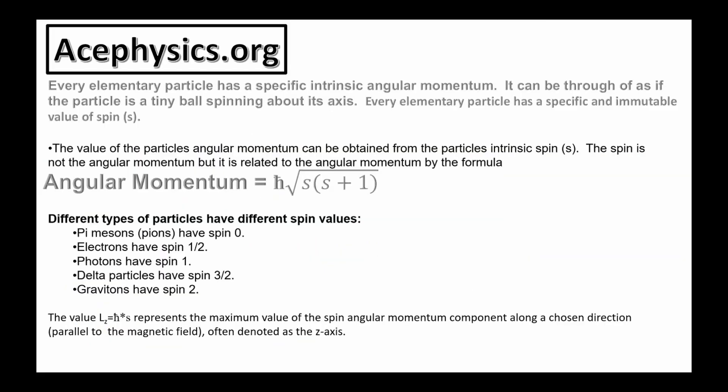On this slide, I'm going to tell you about some important properties of elementary particles. On the next slide, I'll use a gyroscope to help visualize these ideas. Every elementary particle has a specific intrinsic angular momentum. It can be thought of as if the particle is a tiny ball spinning about its axis. Every elementary particle has a specific and immutable value of spin, denoted s.